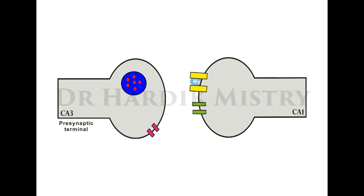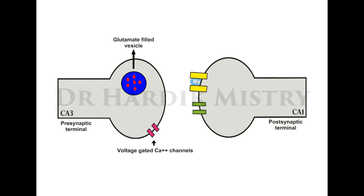To understand the molecular basis of synaptic plasticity, the CA3-CA1 synapse is used as an example. CA3 pre-synaptic terminals have glutamate-filled vesicles; glutamate is an excitatory neurotransmitter. The CA1 post-synaptic membrane has two types of glutamate receptors: AMPA receptors, which are permeable only to sodium ions, and NMDA receptors, which are permeable to both sodium and calcium ions, but at resting state NMDA receptors are blocked by magnesium ions.